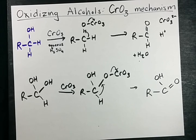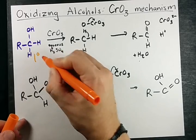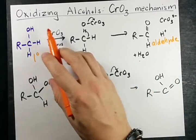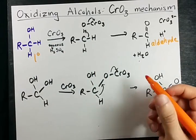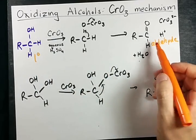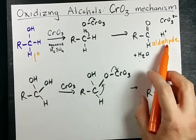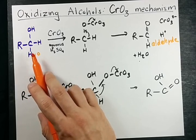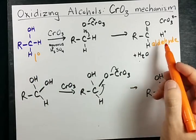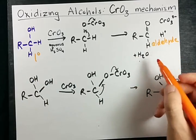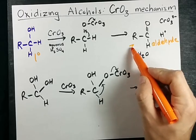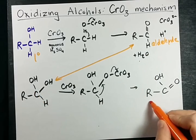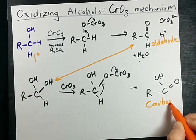Primary alcohols become aldehydes via oxidation, and secondary alcohols can become ketones. That mechanism is the same as this one, except one of these H's is a different chain of carbons — maybe an R-prime or something. Two degrees becomes a ketone, one degree becomes an aldehyde. But the aldehyde — again there's an equilibrium between that aldehyde and the diol if you're in aqueous solution — and it gets oxidized into a carboxylic acid.